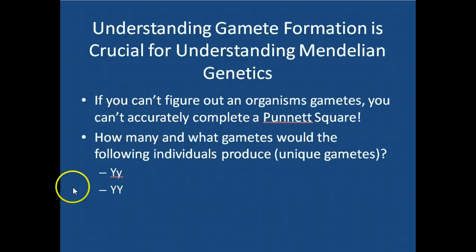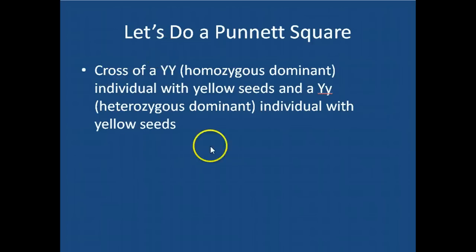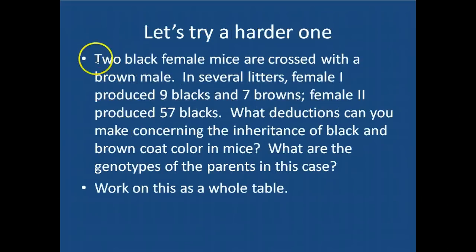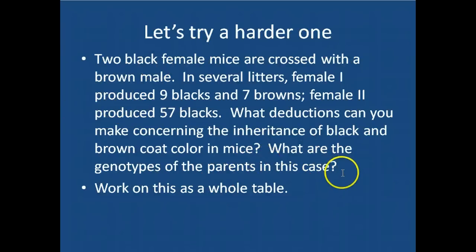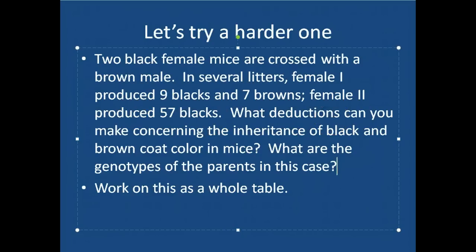I want you to practice figuring out how many and what gametes the following individuals would produce. Do a Punnett square depicting the crossing of a homozygous dominant individual with yellow seeds and a heterozygous dominant individual with yellow seeds — bring that to class on Thursday. Then try to tackle the more difficult problem on your own, and when you come to class on Thursday we'll work through it together.